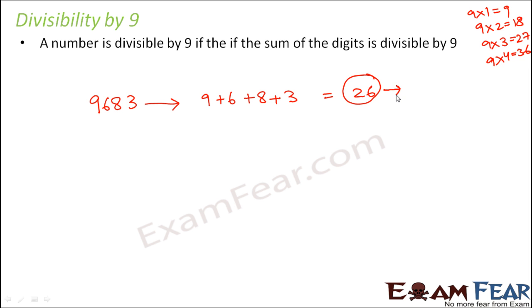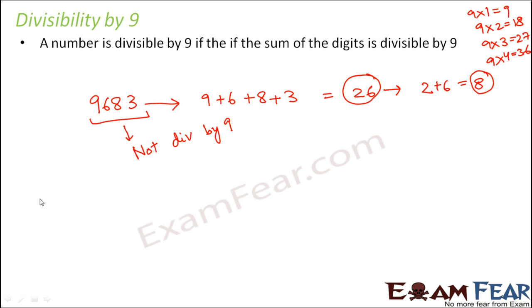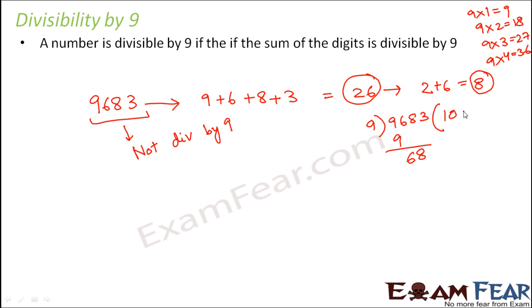In case you are not very sure, break it down again — find the sum of the digits of 26, which comes out to be 8, and 8 is not divisible by 9. Therefore this number as a whole is not divisible by 9. You can also prove this by actual division, which leaves a remainder of 8, confirming that 9683 is not divisible by 9.